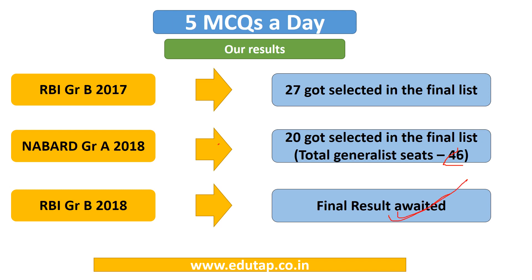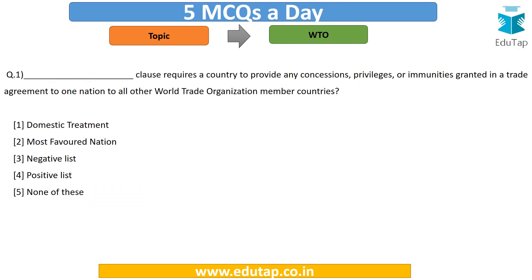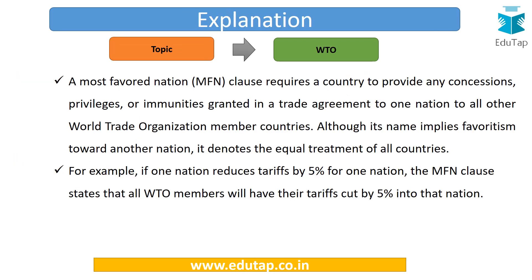Now let's start. The Daesh clause requires a country to provide any concessions, privileges, or immunities granted in a trade agreement to one nation to all other WTO member countries. Is it the domestic treatment clause, the most favored nation clause, the negative list clause, or the positive list clause, or none of these? Think about the answer. The answer is MFN — Most Favored Nation — that is option number two.